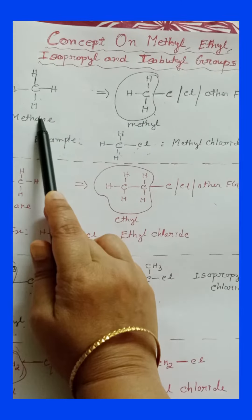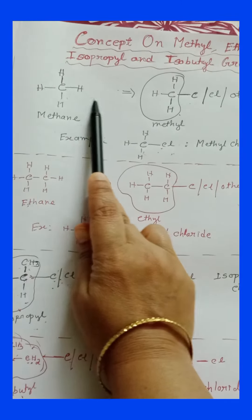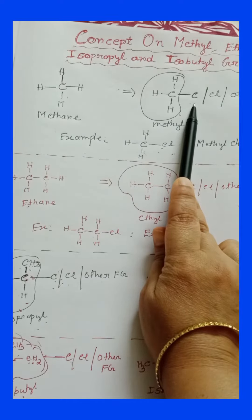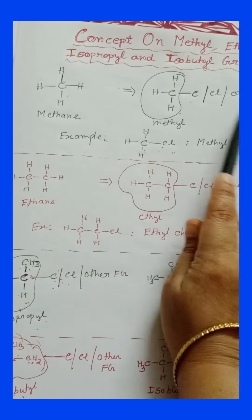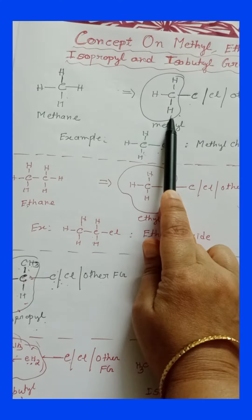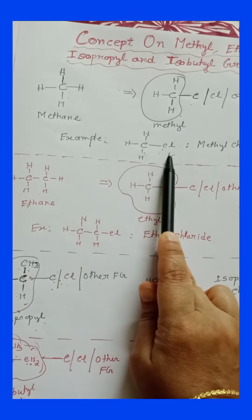This is a methane molecule. When one hydrogen is replaced with carbon, halogens, or other functional groups, this part is called methyl. An example is methyl chloride.